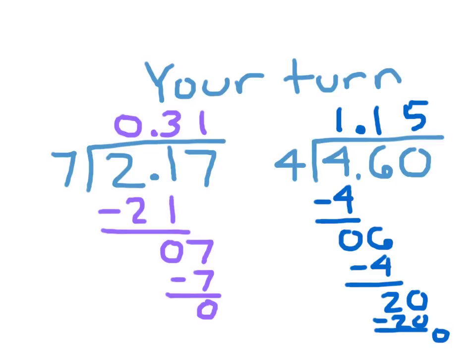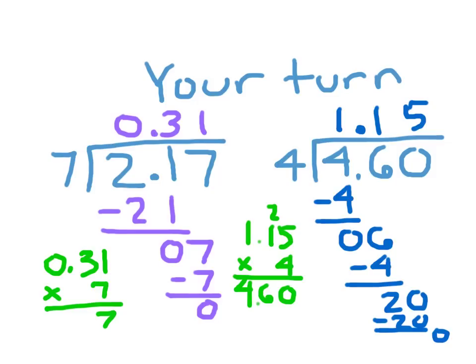How would I check? This problem here, the inverse operation of division is multiplication, so I would go 1.15, my answer, and multiply it by what? Right, 4. And as you see here, it does work. Work out a check for the other problem. Did you write 0.31 times 7? And did it work out? 7 times 1 is 7. 7 times 3 is 21. Two decimal places. Two decimal places. Yep, it does.